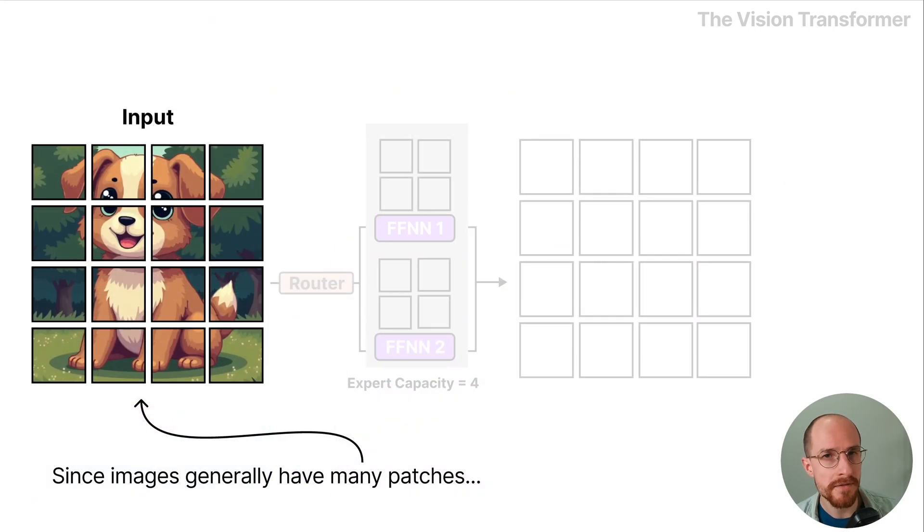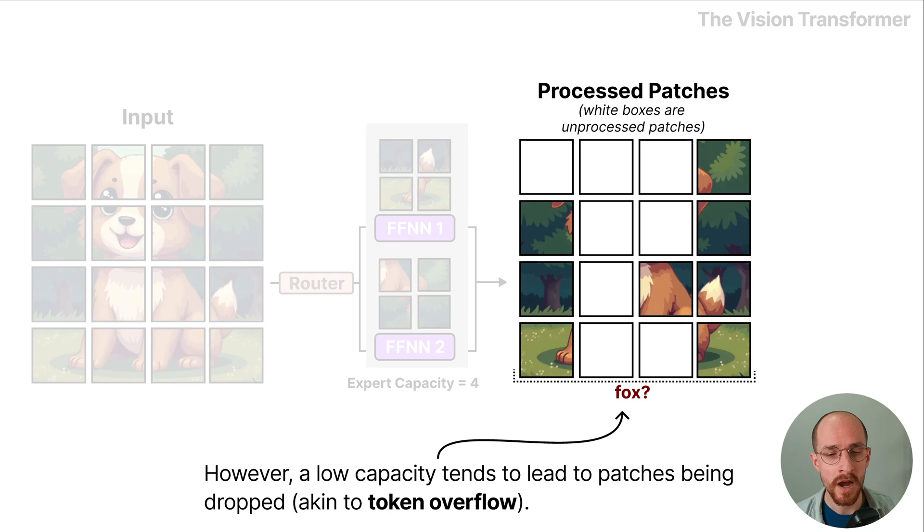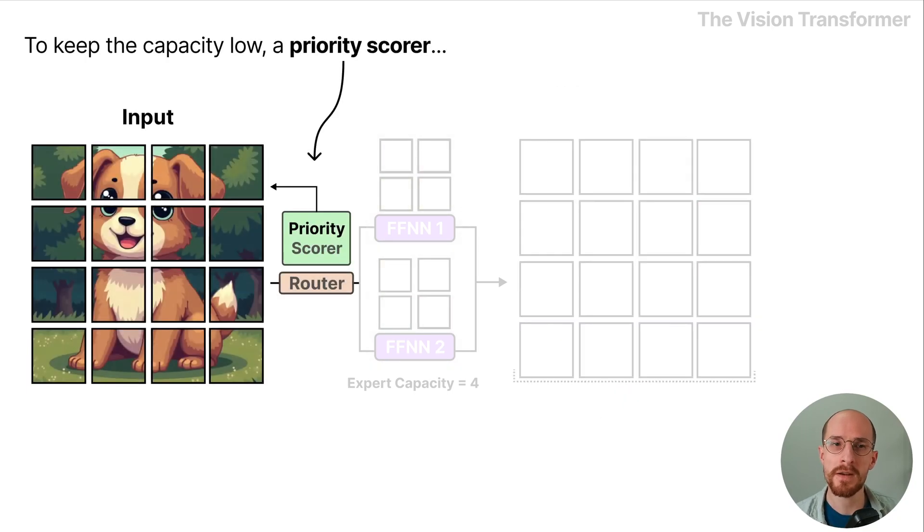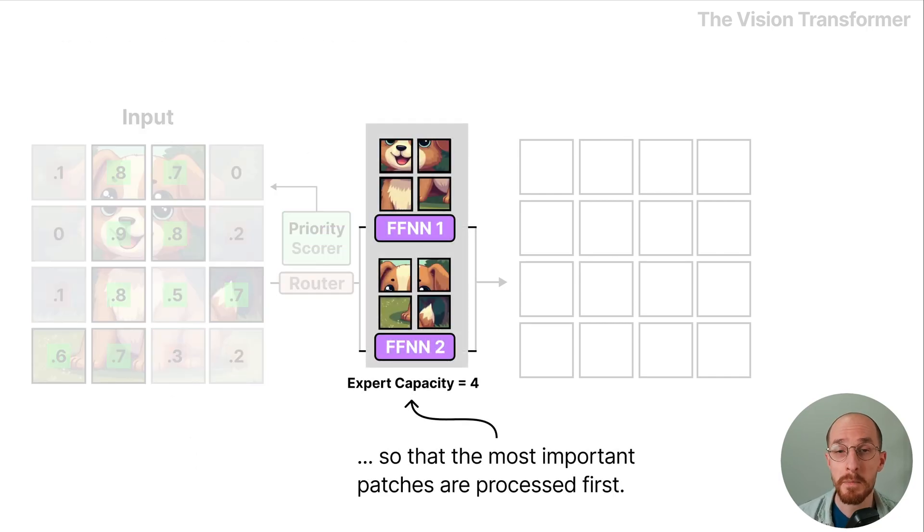Since images generally have many patches, a low expert capacity is used for each expert to reduce hardware constraints. However a low capacity tends to lead to patches being dropped and this is akin to token overflow. To keep the capacity low a priority score assigns important scores to patches so that the most important patches are processed first.